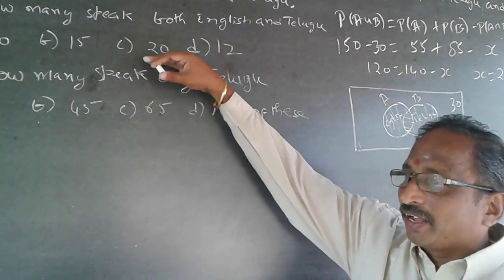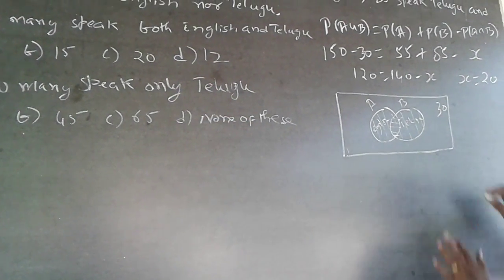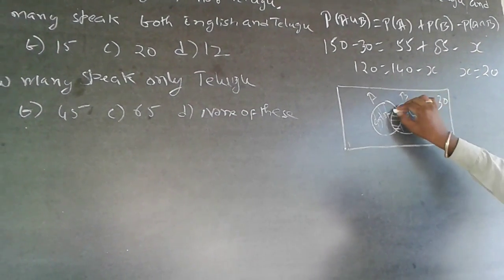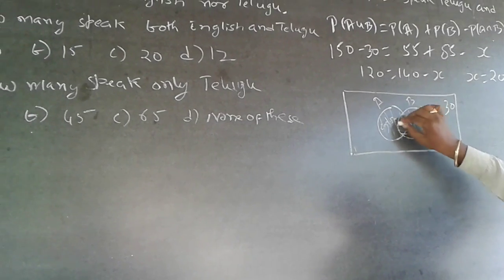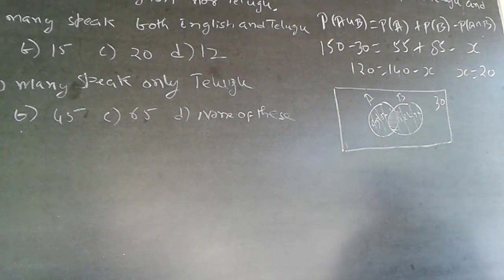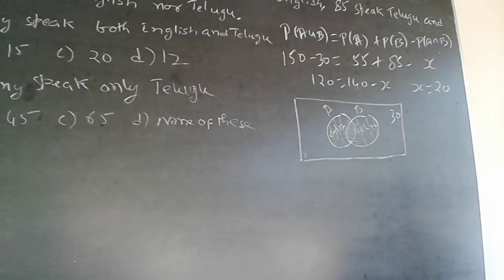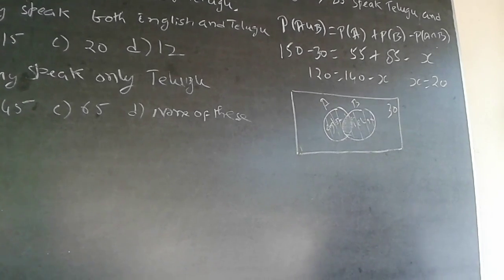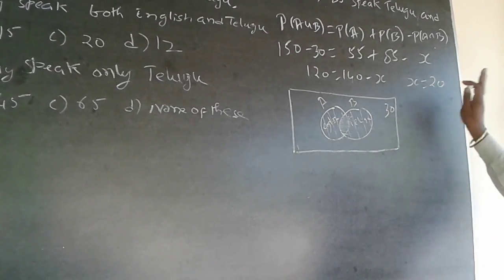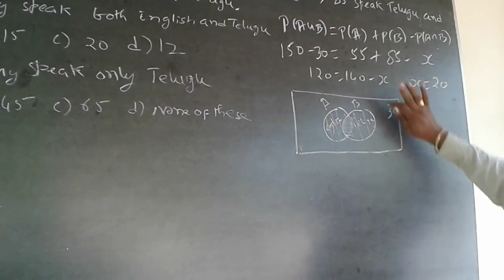So the answer to the first question is 20. Twenty people speak both English and Telugu — this common portion represents both. The answer is 20.